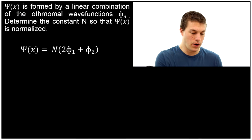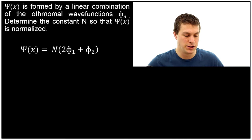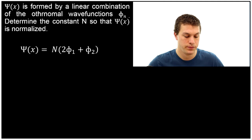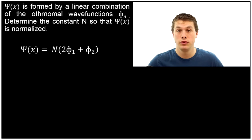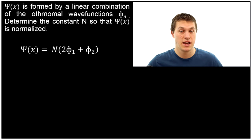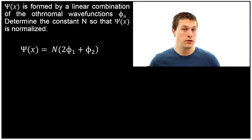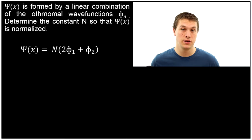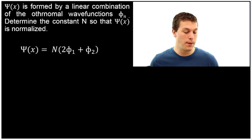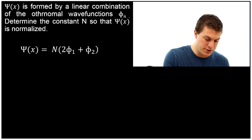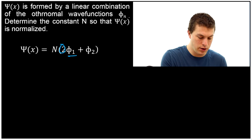Let's actually use it. This problem says that psi of x is formed by a linear combination of the ortho-normal wave functions phi n — determine the constant n so that psi is normalized. We're taking two wave functions and mixing them together to make a new wave function. In quantum mechanics, we do this all the time. This is called a superposition of states, or a linear combination. Any time you have wave functions that are solutions to the Schrödinger equation and you add them together in linear combinations, that will also be a solution to the Schrödinger equation. This particular mixture is two parts psi 1 and one part psi 2.